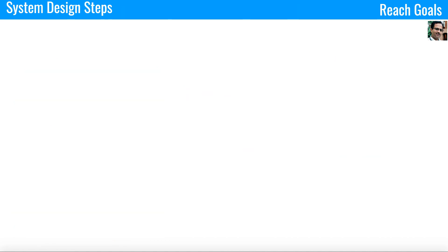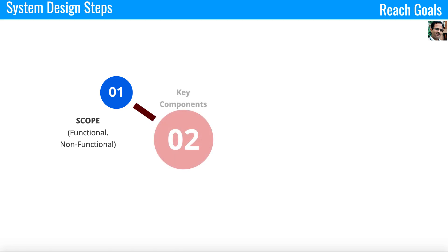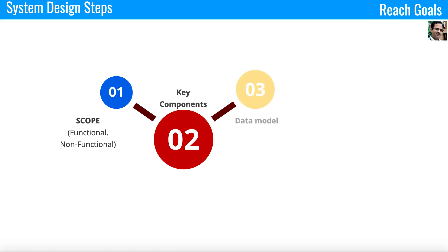As I explained in my earlier videos, when you start doing a system design you have to follow the divide and conquer rule. You have to focus on little pieces like scope — that is functional and non-functional requirements. You have to talk about the key components in the system design, focus on the database or data model, and also talk about the operational cost and maintenance.